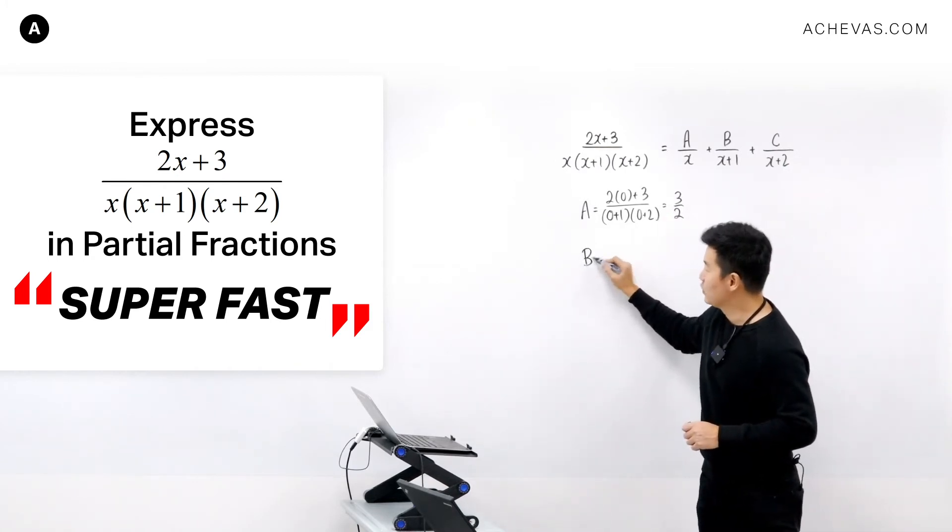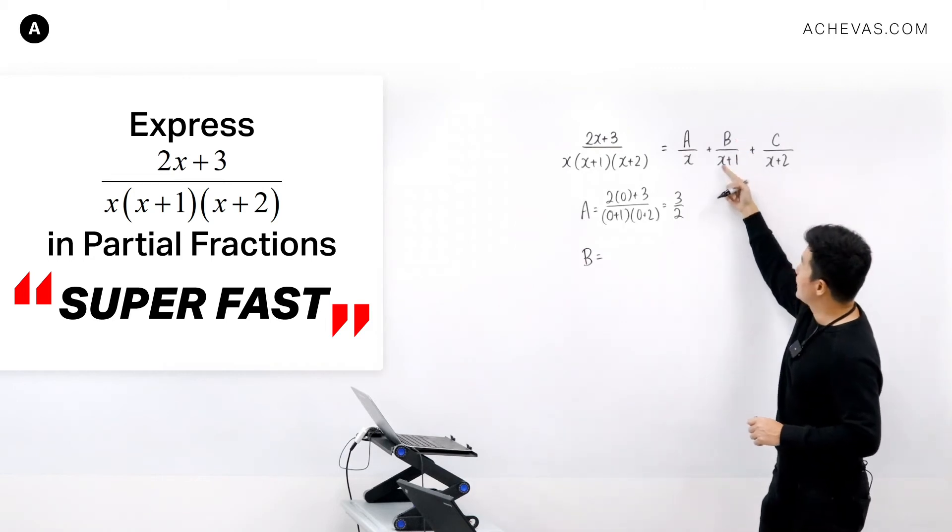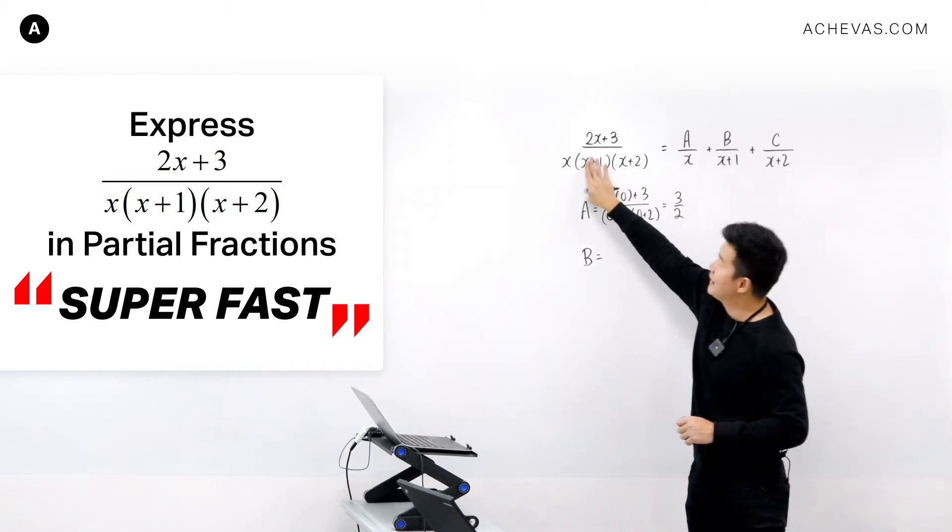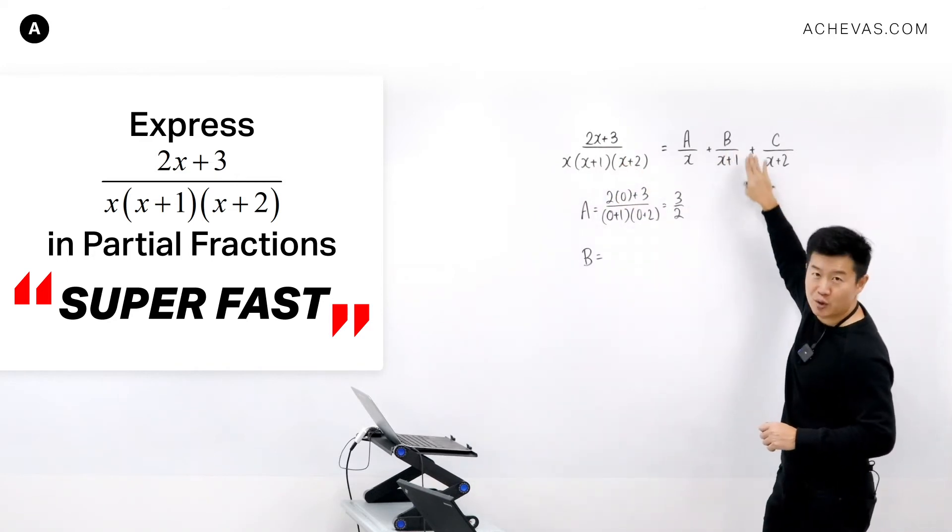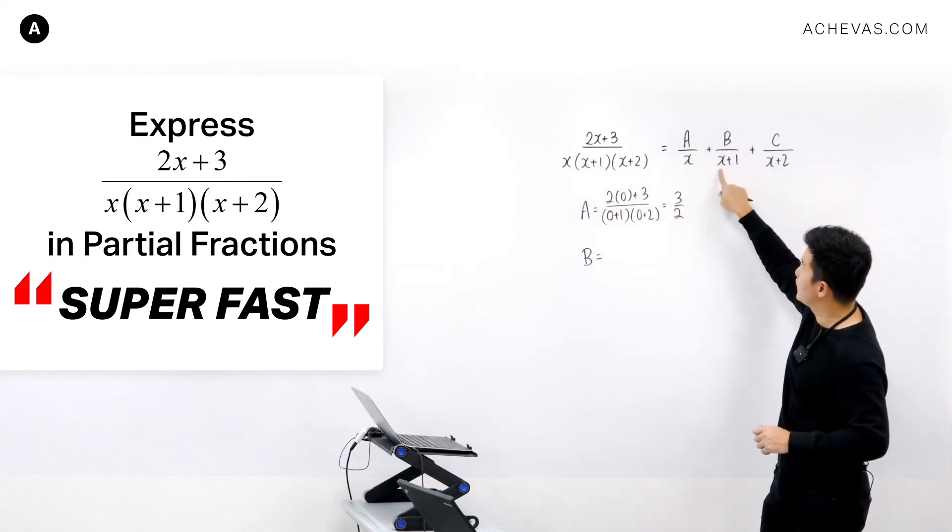To find B, we can do the same thing. In the denominator, we have X plus 1. So I'm going to be ignoring X plus 1, and I'll replace the rest of the X by the value of X that caused the denominator here to be 0, which is minus 1.